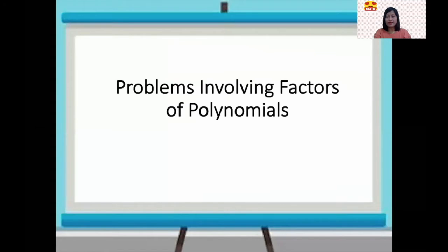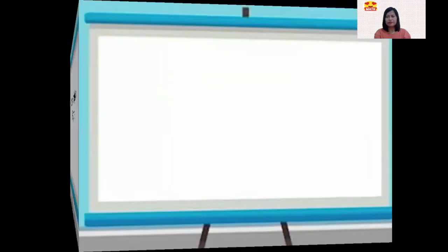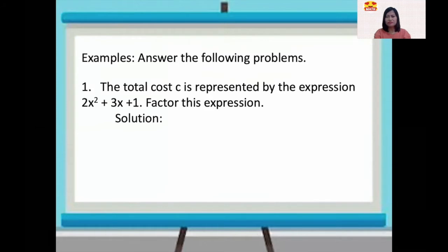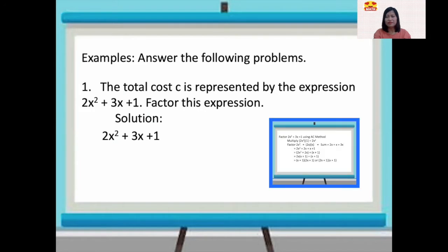Let's have the examples now. Number one: the total cost C is represented by the expression 2x squared plus 3x plus 1. Factor this expression. It is a trinomial of the form ax squared plus bx plus c, wherein a is greater than 1, so we will factor this using the AC method.